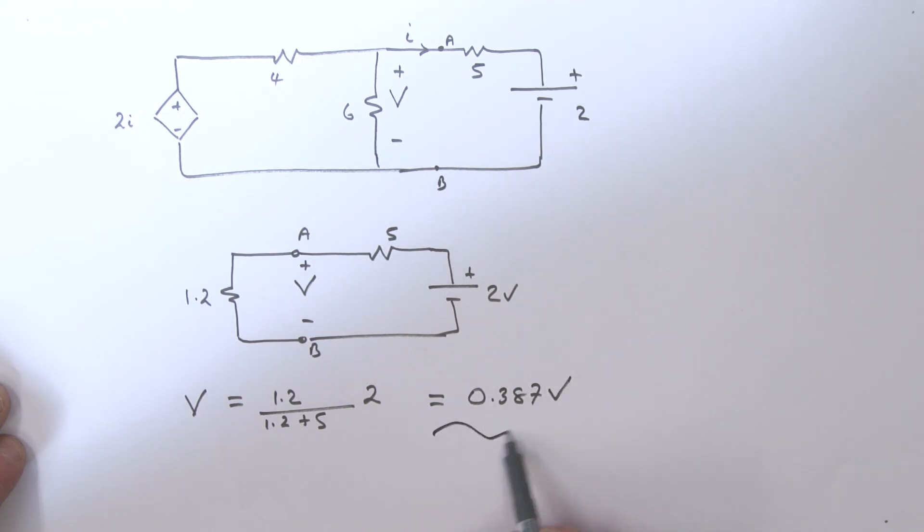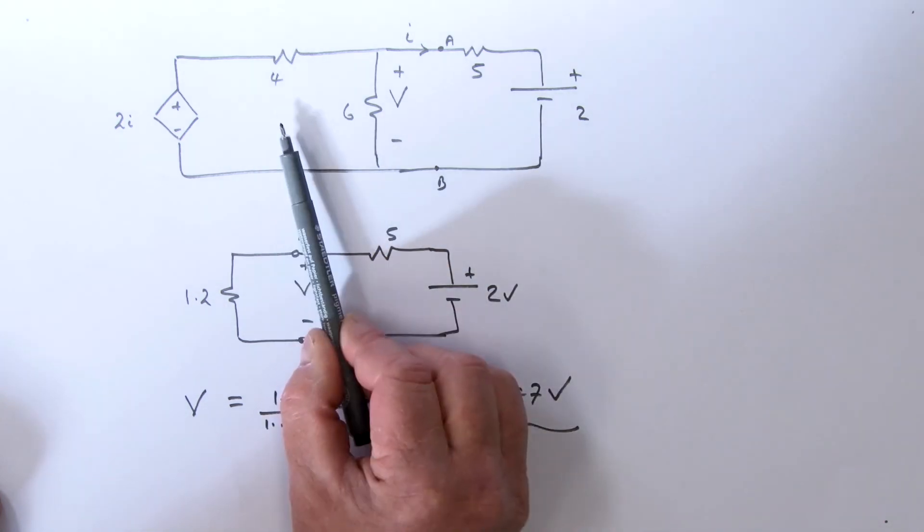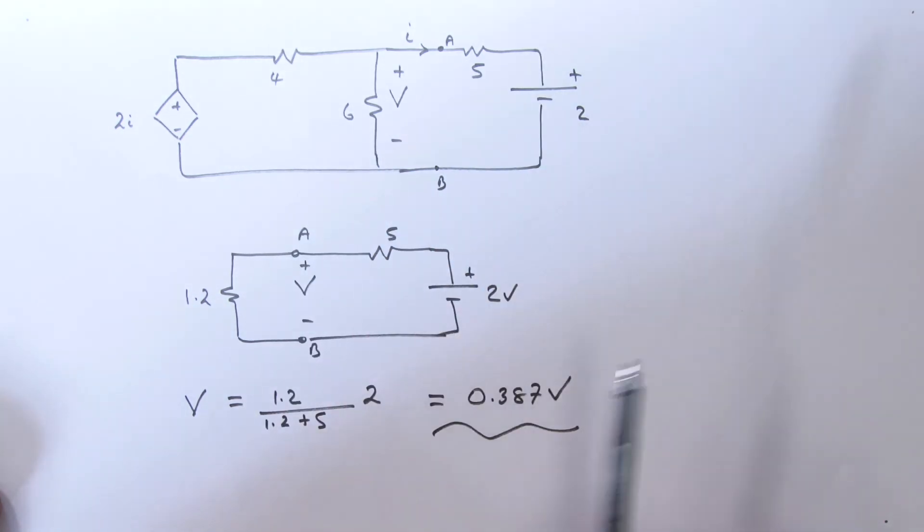You'll see that this answer is very close to what we just did before, and the only difference is due to rounding. So that's an example then that takes you through the complete analysis of this circuit using mesh analysis and then using the Thevenin equivalent, coming up with a much simpler circuit to determine that voltage V. Hope this helps, and I'll see you next time.